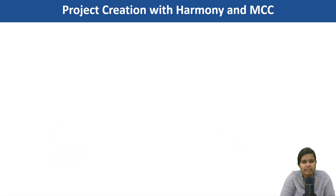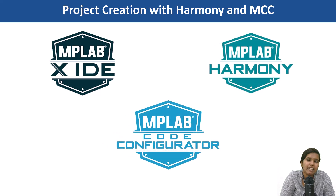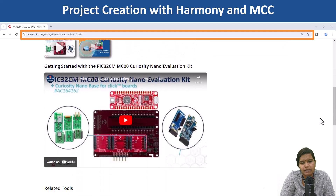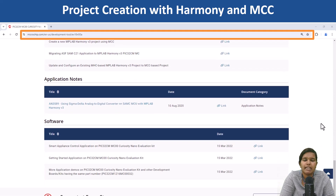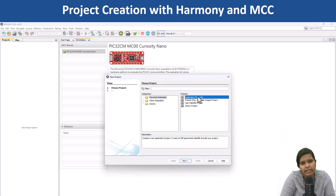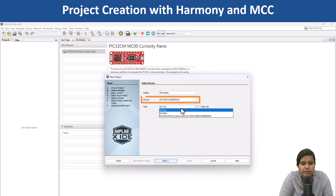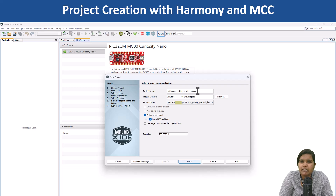Jumpstart your development with tools like MPLAB X IDE, MPLAB Harmony and MCC. Create an application on the PIC32CMMC CuriosityNano Evaluation Kit using MPLAB Harmony and MCC. Open MPLAB X IDE, go to File and click on New Project. Provide PIC32CM1216MC00032 as the device name. Follow the on-screen instructions to complete the project creation.